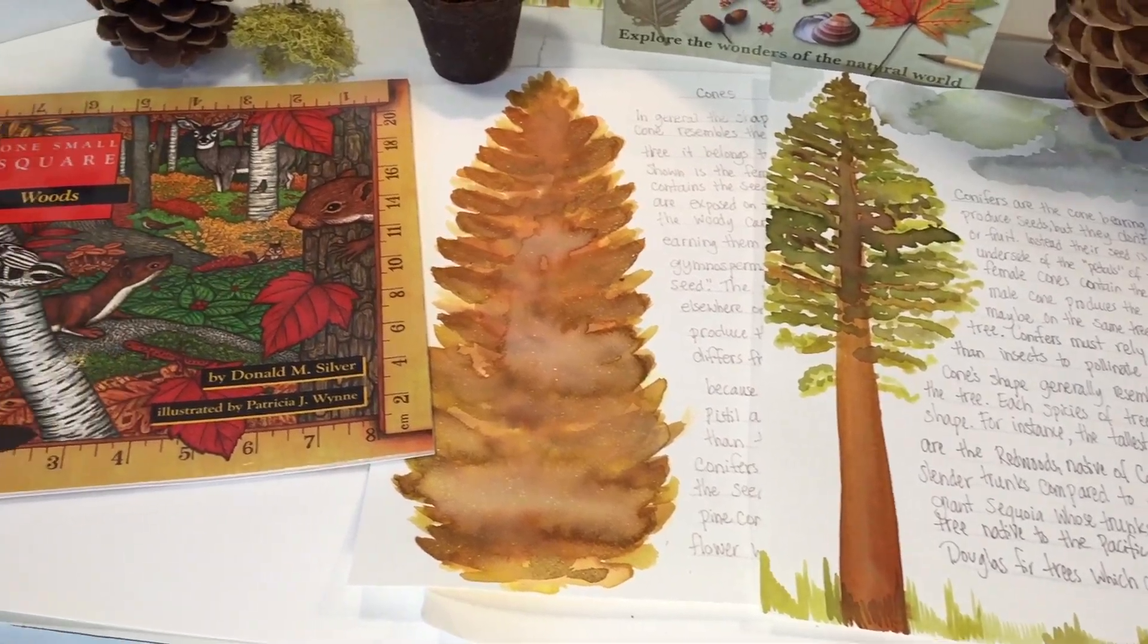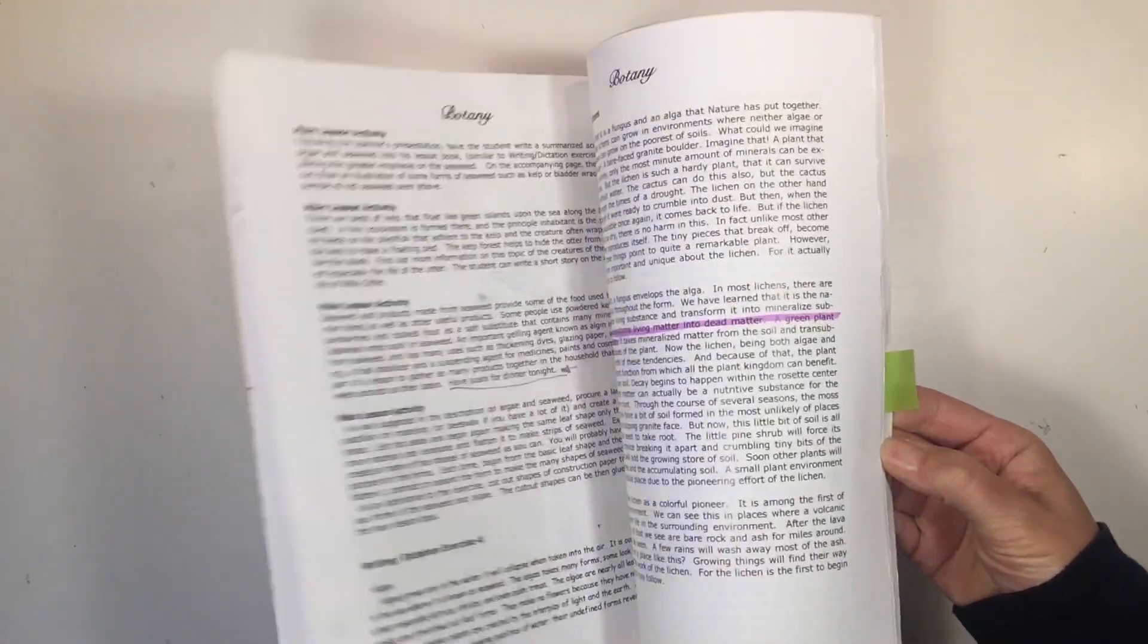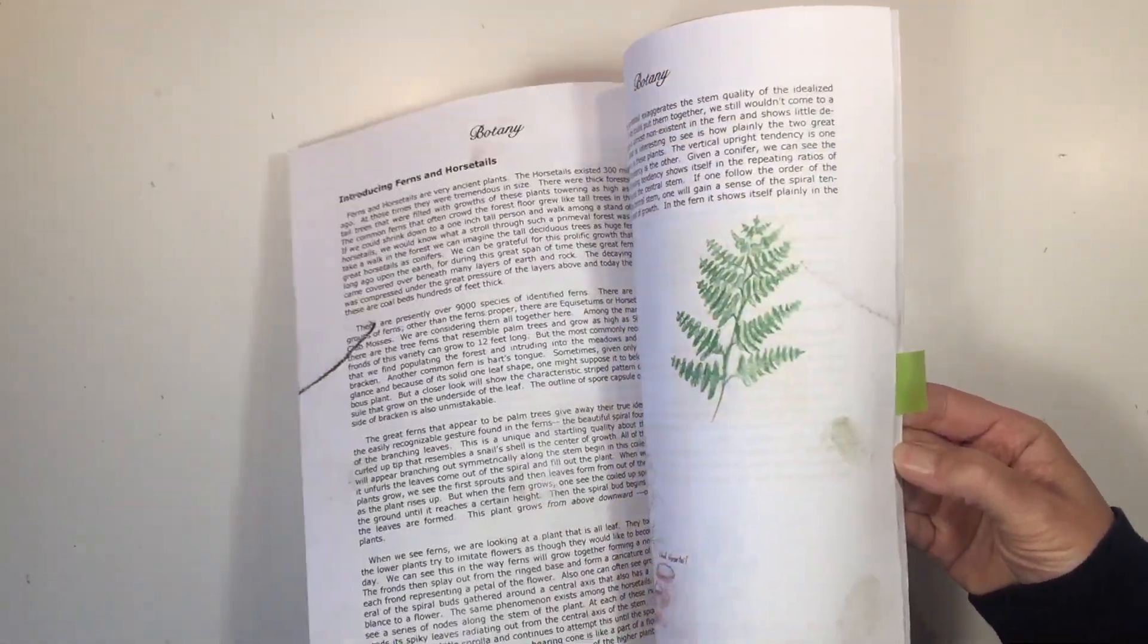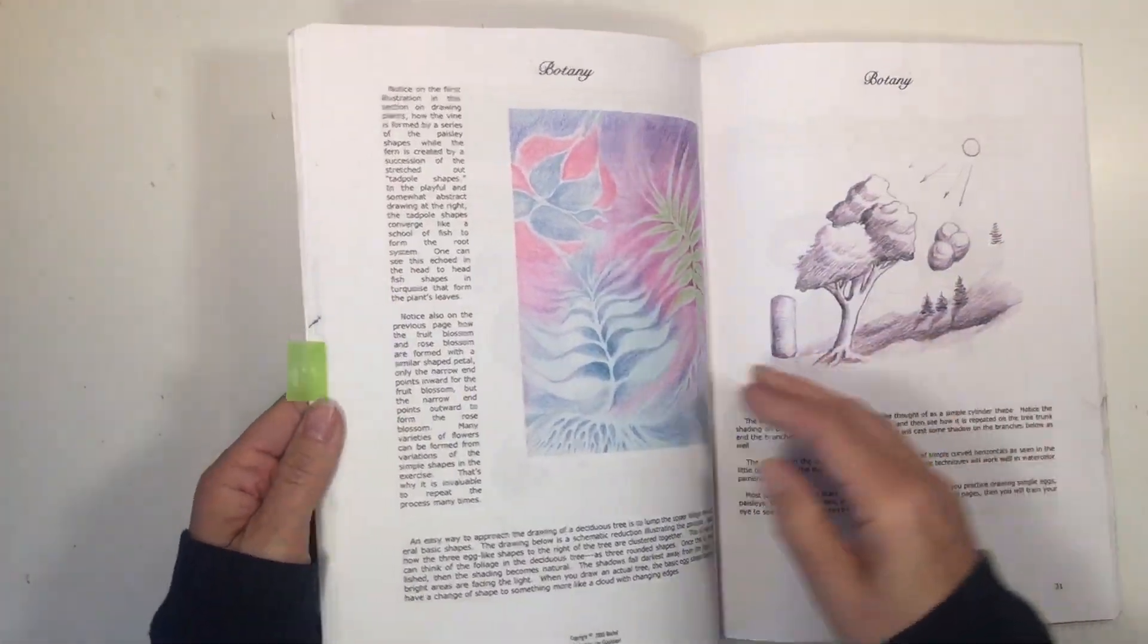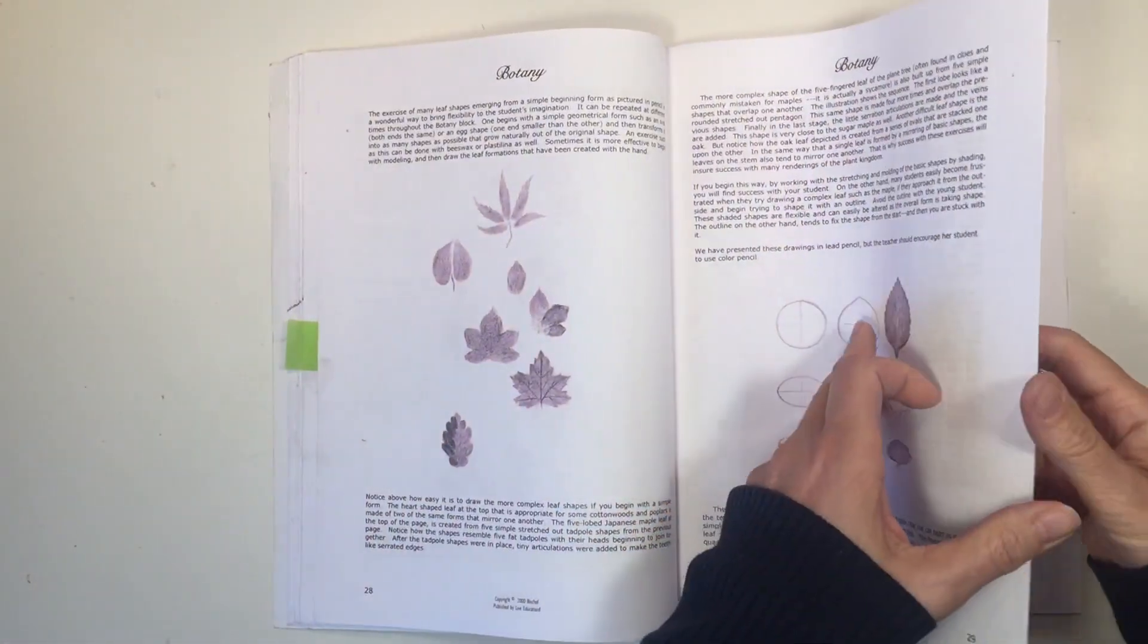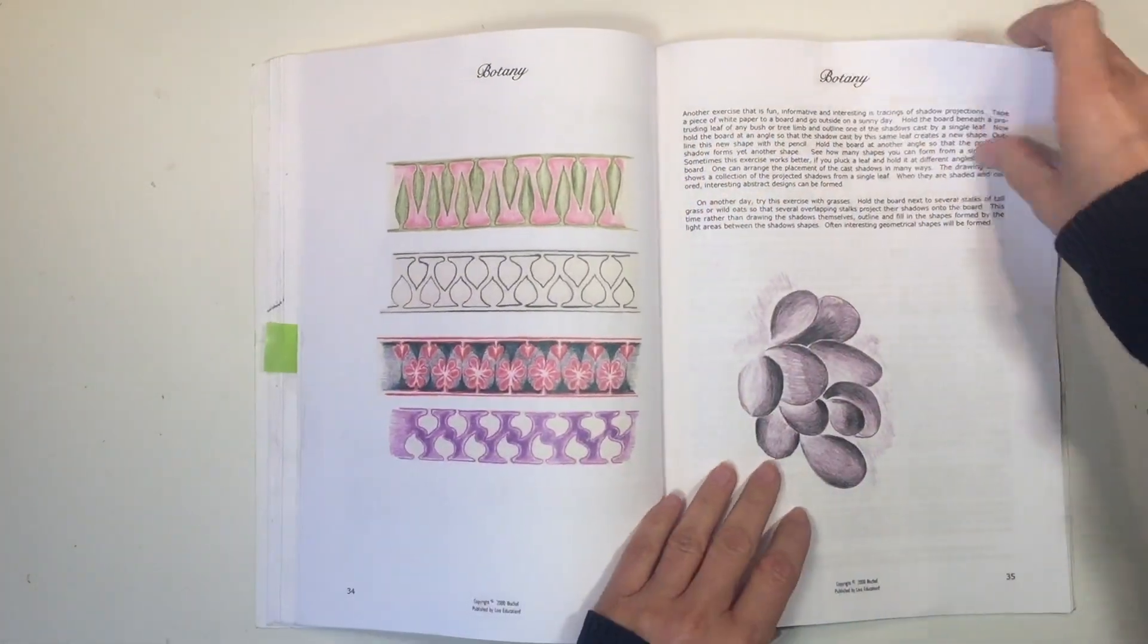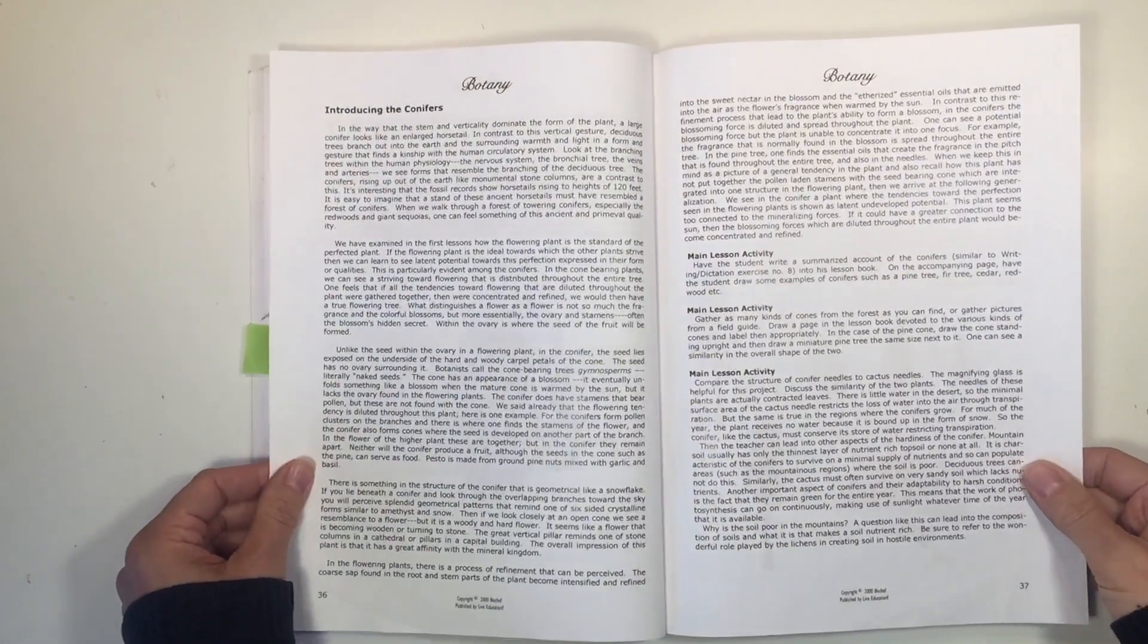Today we're doing a very involved lesson. We're using the live education curriculum and working on conifers, but there was a section between our last lesson and the lesson on conifers that we're skipping. There are a lot of art tutorials to help with drawing. We decided to skip those for now but may revisit them later.